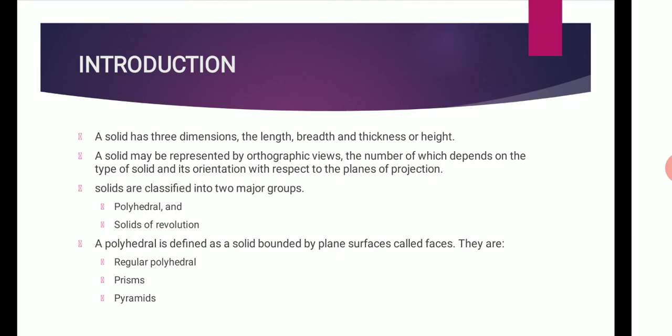It is classified into polyhedron and solids of revolution. What do you mean by polyhedron? Polyhedron is defined as solid bounded by plane surfaces, which is nothing but faces. They are regular polyhedron, prisms, and pyramids.